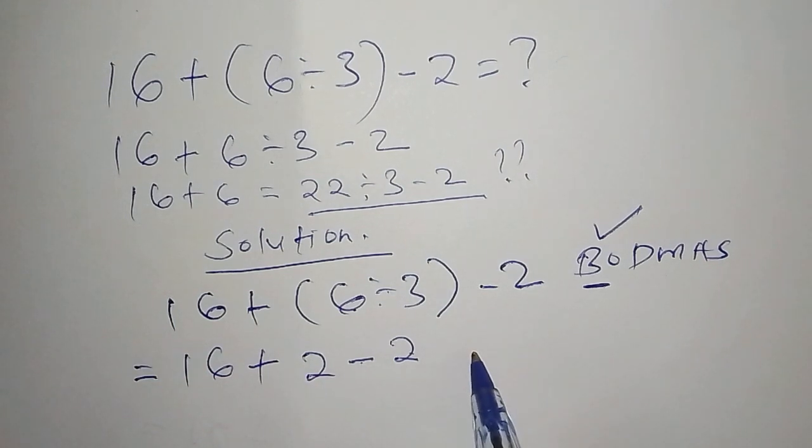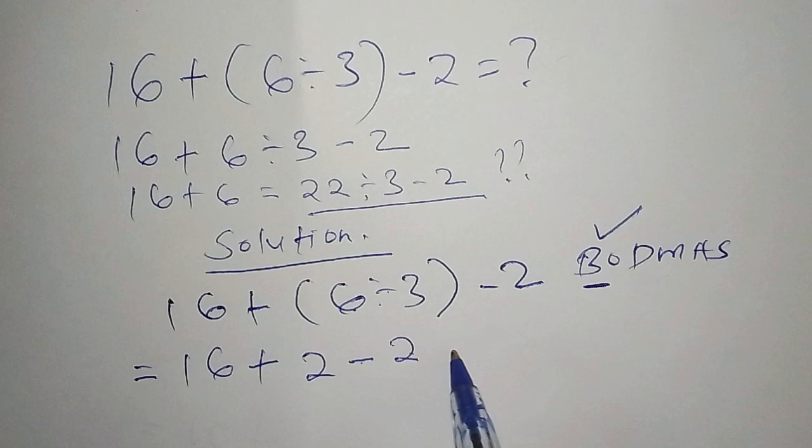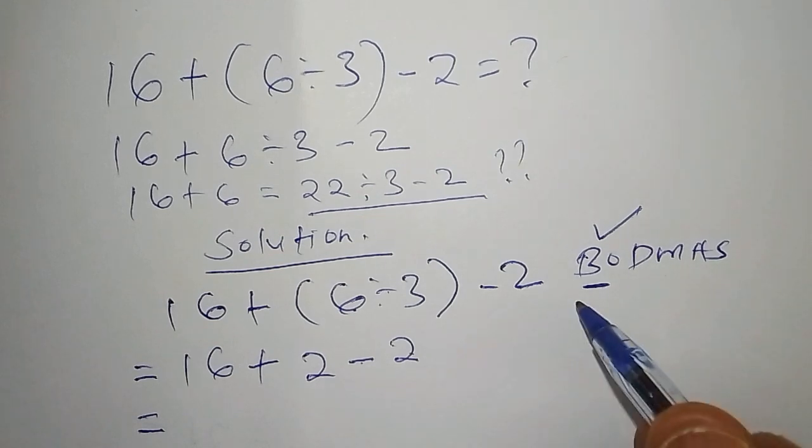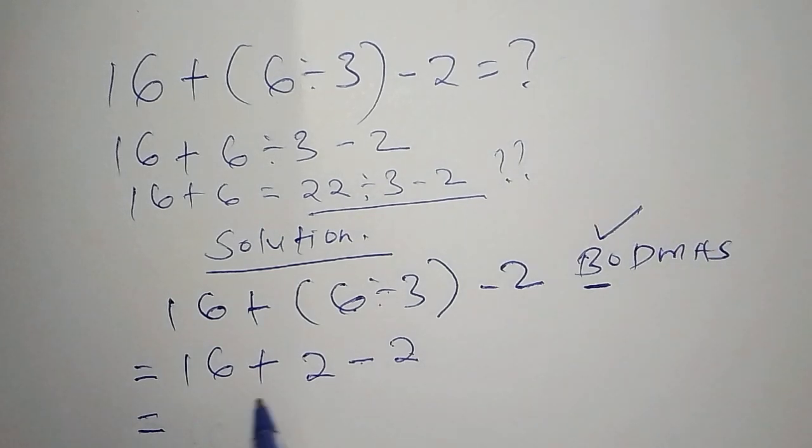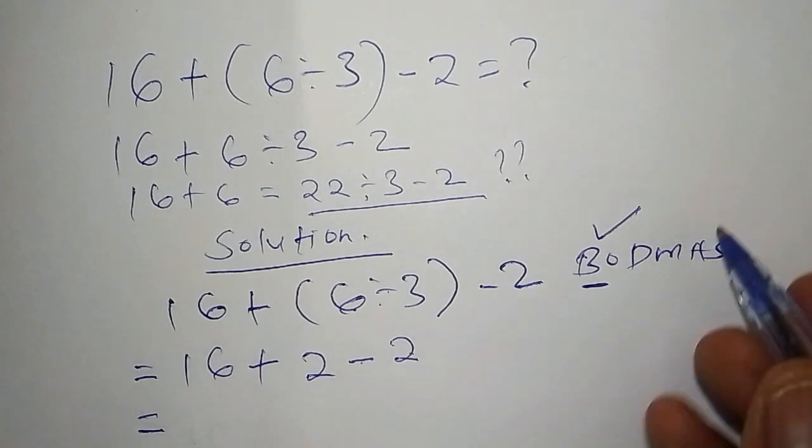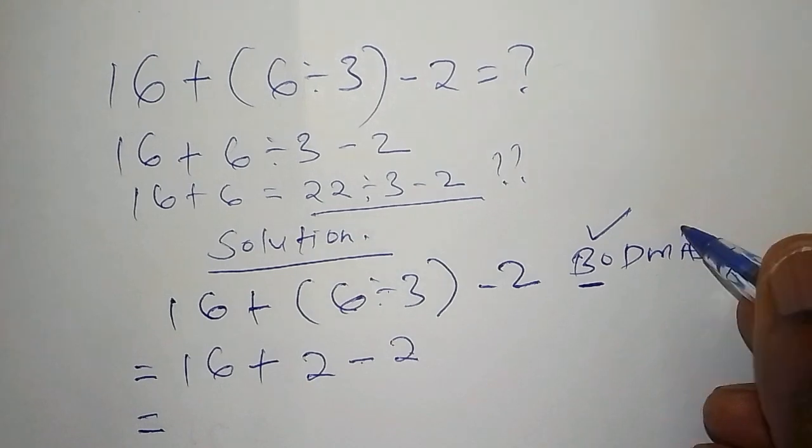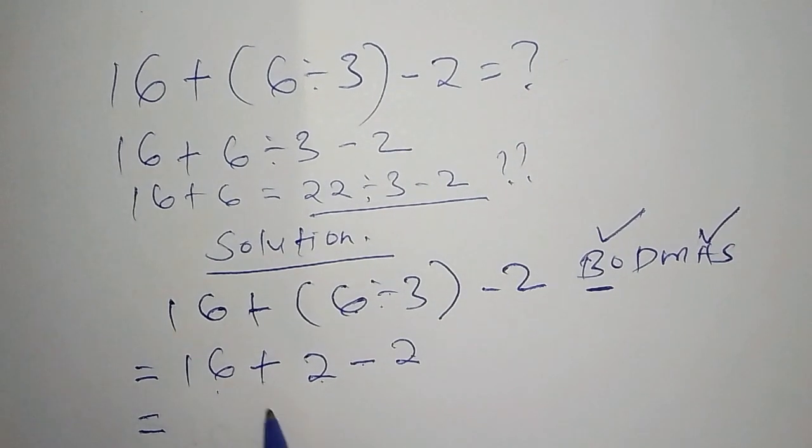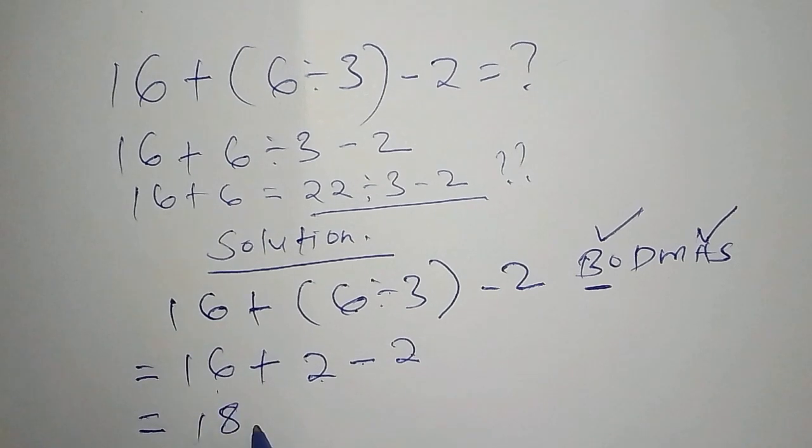After this stage, from the BODMAS rule we move straight to the addition side. A stands for addition. So we're going to take 16 + 2 which is 18, then 18 - 2.